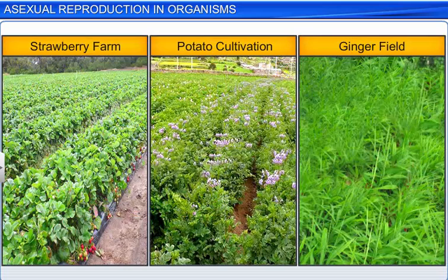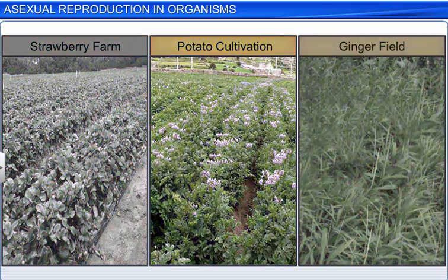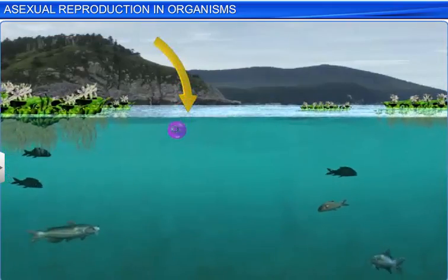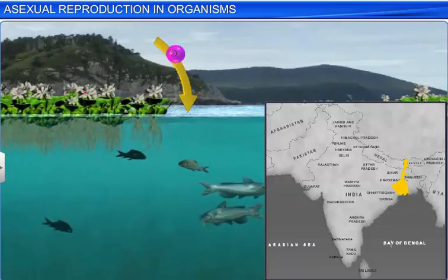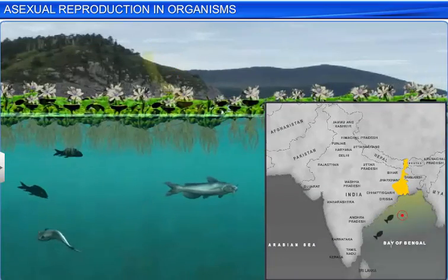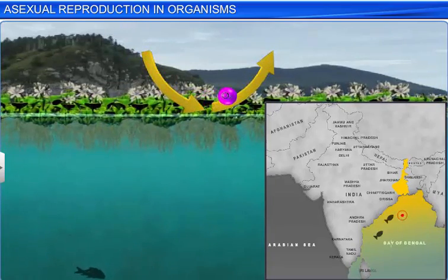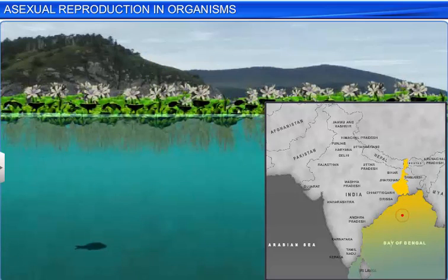Interestingly, farmers and gardeners make full use of vegetative propagation for commercial cultivation of various plants, including strawberry, potatoes, and ginger. Vegetative propagation, however, can turn into a problem in certain cases, like the fishermen of Bengal have discovered. Water hyacinth, an aquatic plant with a phenomenal rate of vegetative propagation, is choking the Bay of Bengal and killing millions of fish, thereby ruining the livelihood of the fishing community.